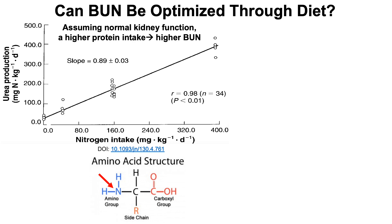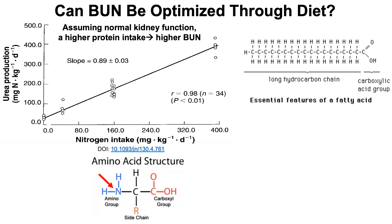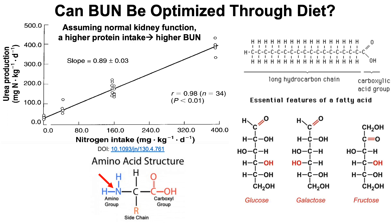This assumes normal kidney function. If your kidney function is normal, a higher protein intake should lead to a higher blood urea nitrogen level. Just to illustrate that it's almost exclusively amino acids from proteins that provide dietary nitrogen — here we're looking at the essential features of a fatty acid, and you can see there are no Ns, no nitrogen, in its chemical structure. Similarly, for sugars including glucose, galactose, and fructose, there are no Ns for nitrogen either. So the higher your dietary protein intake, including amino acids, the higher your urea production and potentially your blood urea nitrogen.